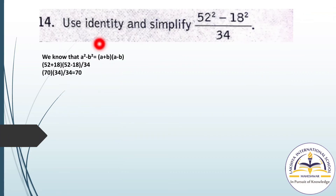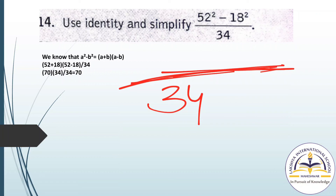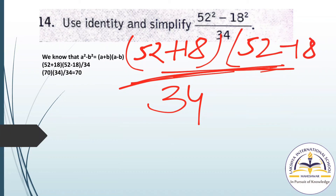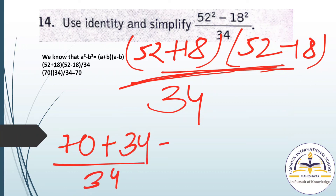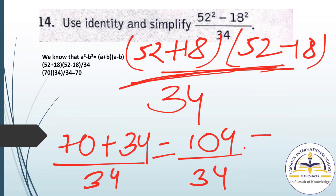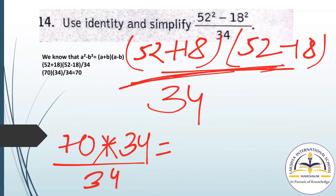Question number 15: use identity and simplify (52 square minus 18 square) divided by 34. We do not change the denominator; we apply Identity 3 to the numerator: (52 + 18)(52 - 18) divided by 34. That is 70 multiplied by 34, divided by 34. The 34 cancels, giving 70 as the answer.